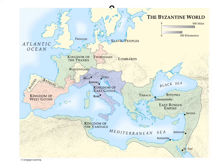This East Roman Empire lasted for approximately 1,000 years from the fall of the Roman Empire centered in Italy, so in total the Roman Empire — both the Western and the Eastern — lasted almost 2,000 years.